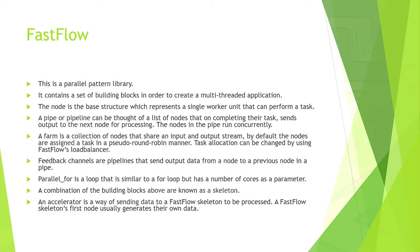A farm is a collection of nodes that share an input and output stream. By default, the nodes are assigned to tasks in a pseudo-round-robin order. Task allocation can be changed by using Fastflow's load balancer. Feedback channels are pipelines that send output data from a node to a previous node in a pipe. The parallel for is a loop similar to a for loop, but has the number of cores as a parameter, allowing you to vary the number of cores. A combination of these building blocks is known as a skeleton.